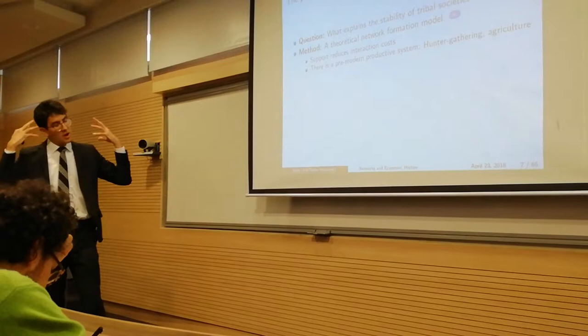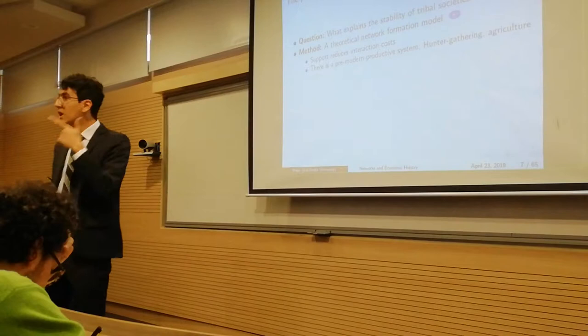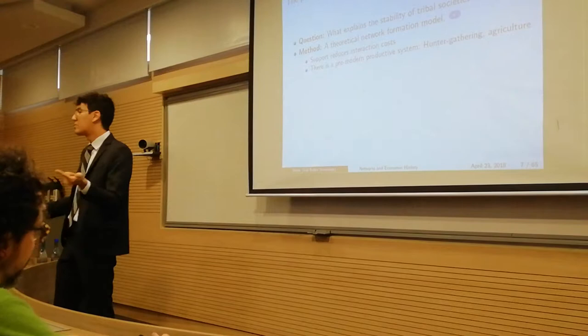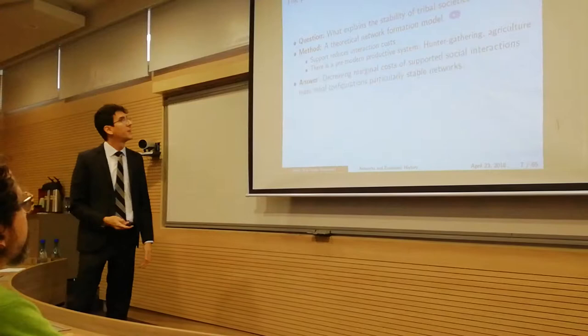We have hunter-gatherers and we have farmers, people that produce and have an agricultural sector. Once you do these tiny modifications to the canonical network formation model, you get a sort of clear answer to this question.